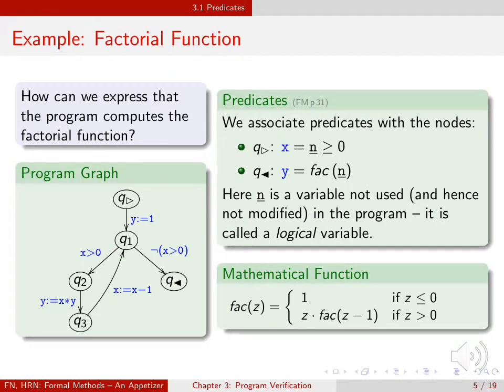To express its intended behavior, we will have a specification at the initial node and at the final node. At the initial node, we say that x is equal to some n that is not negative.